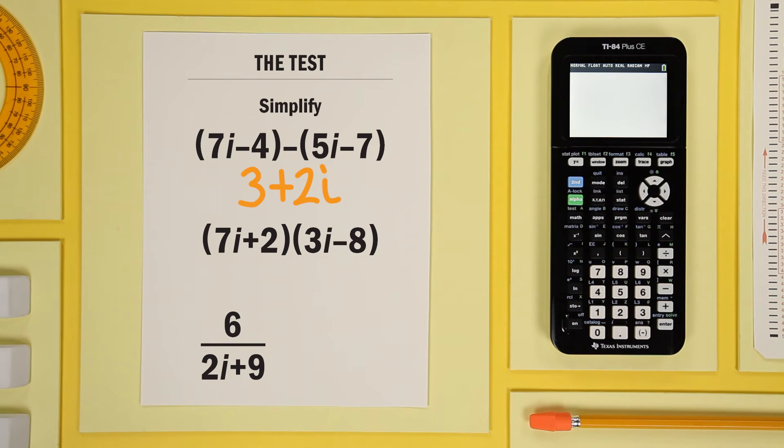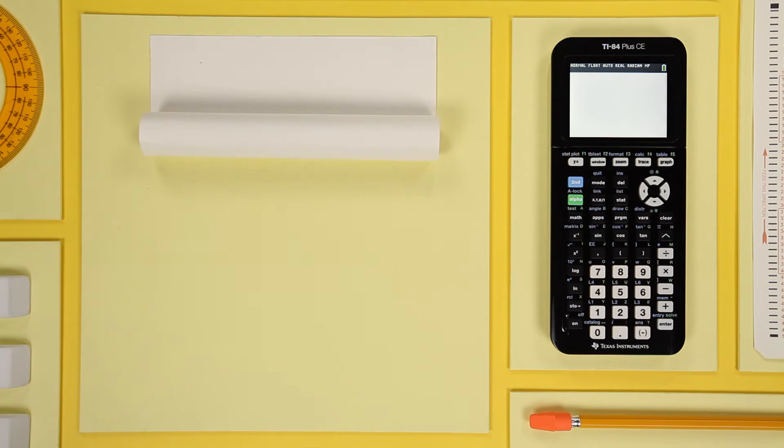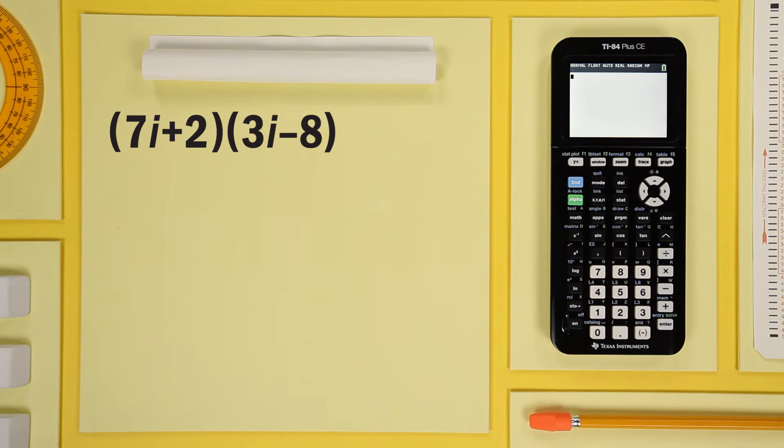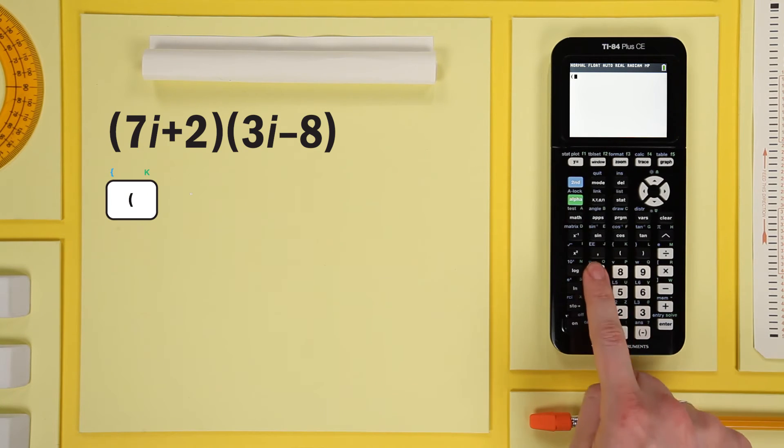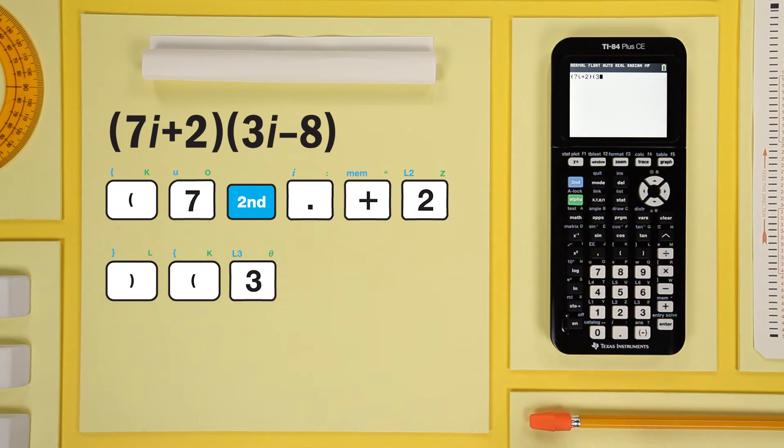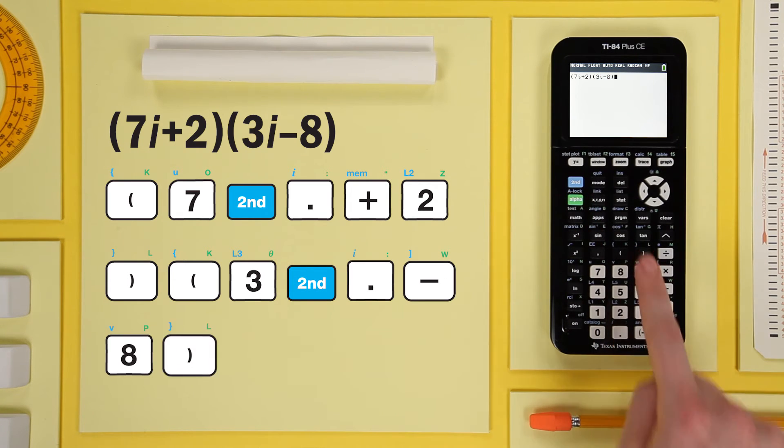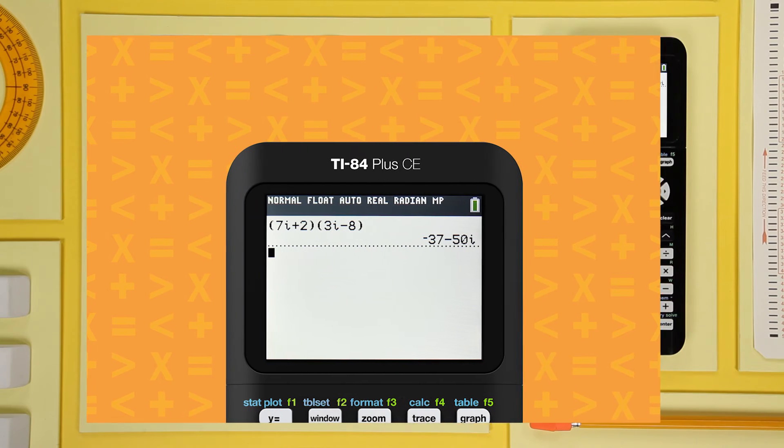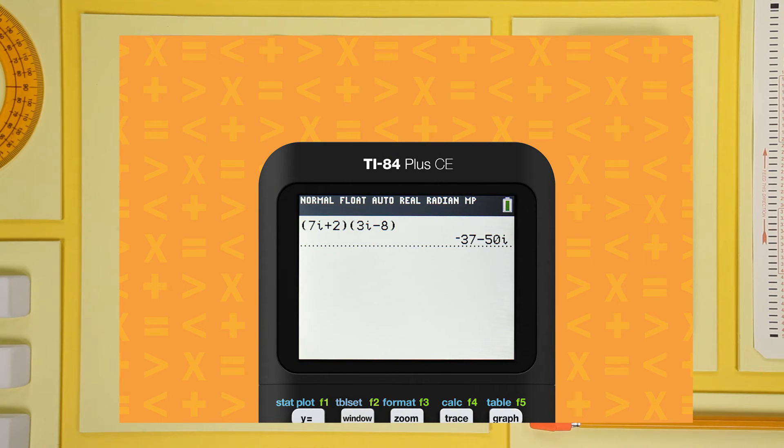It doesn't get any simpler than that. Let's try another. 7i plus 2 times 3i minus 8. Let's enter the equation a little faster now. And we get 7i plus 2 times 3i minus 8 is equivalent to negative 37 minus 5i.